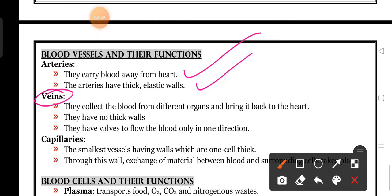Next one, veins. They collect the blood from different organs and bring it back to heart. They bring deoxygenated blood from all parts of the body to heart, and also oxygenated blood from lungs to heart. They have no thick walls. They have valves to flow the blood only in one direction. The valves help to stop the backward flow of blood.